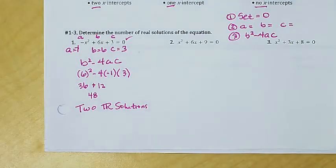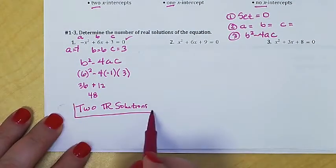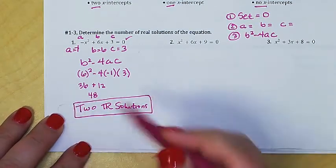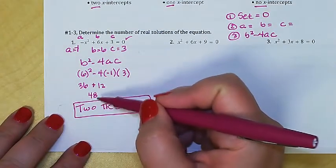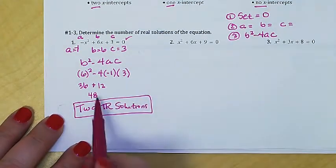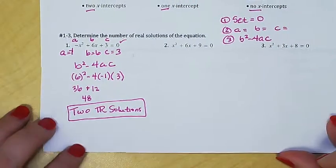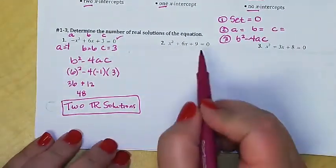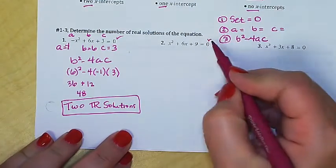Since the discriminant is 48, which is greater than zero, if we were to take the square root of 48 we would get two solutions. So this quadratic has two real solutions. Be careful — 48 is not the answer. If they want to know how many solutions it has, we use the discriminant to make the decision; the answer is that the quadratic has two real solutions.